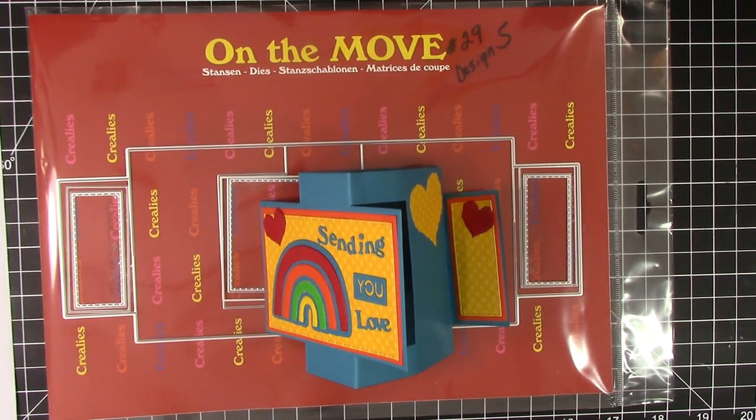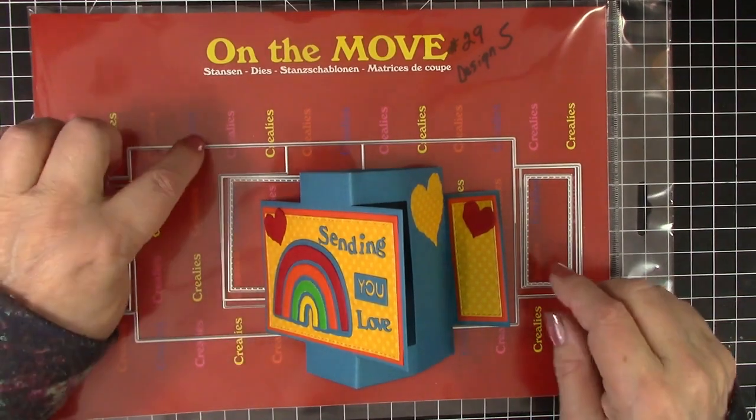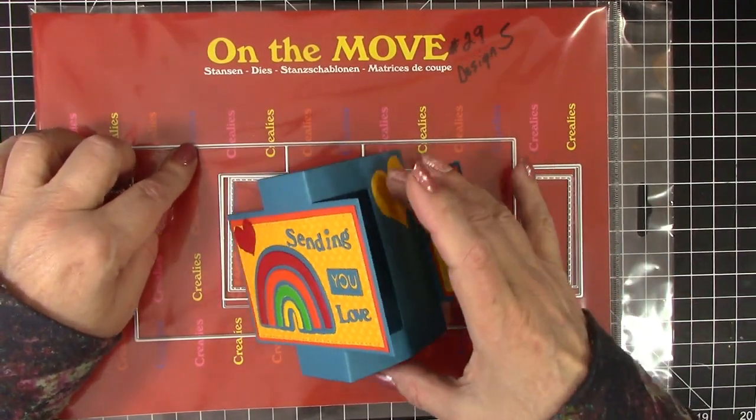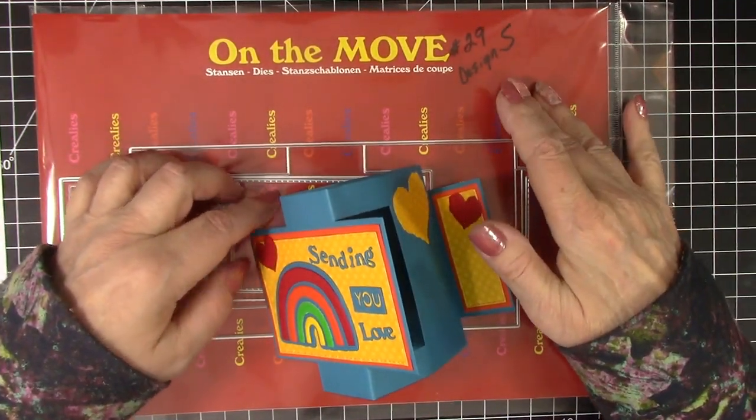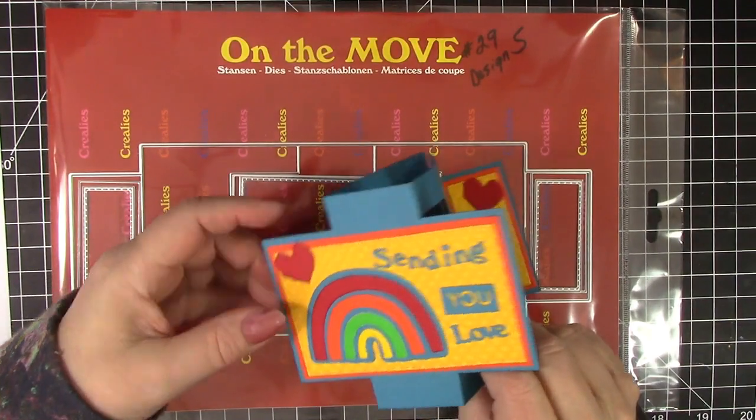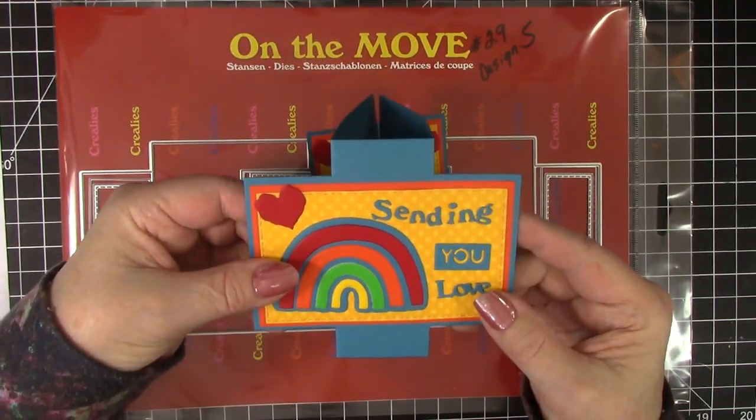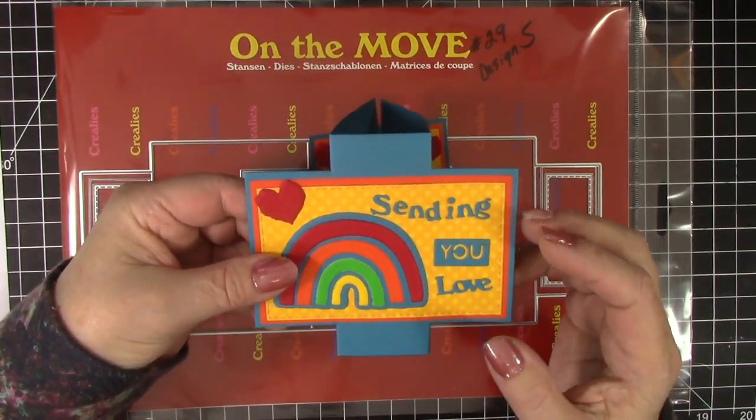I didn't think I would find a totally new shaped fun fold, but Crealey's did it. Hello, I am Karen Hasek of Karen's Creative Cards and I'm sharing this video both on my YouTube channel and Crealey's. This On The Move number 29 Design S die set takes a half sheet of cardstock and turns it into this fun freestanding card.